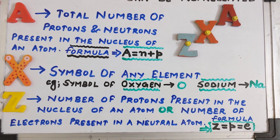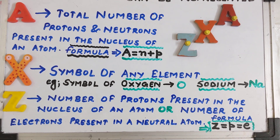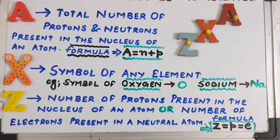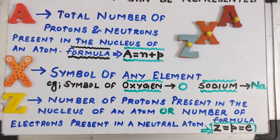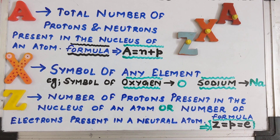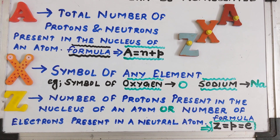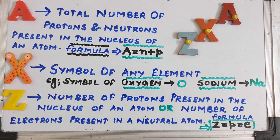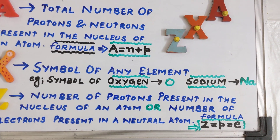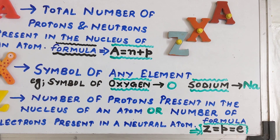Z stands for the number of protons present in the nucleus of an atom, or the number of electrons present in a neutral atom. Since an atom is electrically neutral, the number of protons and electrons are always equal. Therefore, the formula for Z, also known as the atomic number, becomes Z = P = E.